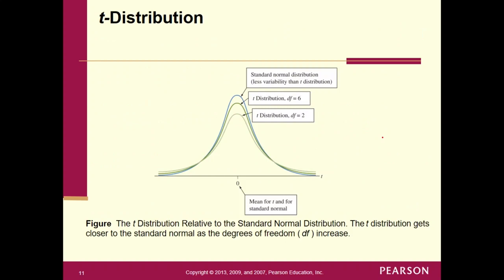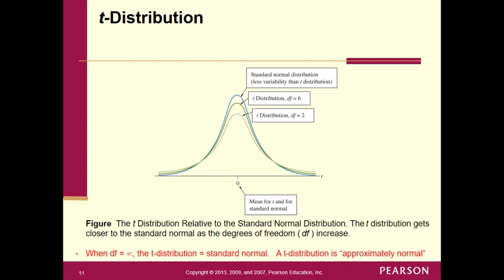Here are three different drawings: one of the standard normal (top graph), and then degrees of freedom of 6 and degrees of freedom of 2. Notice that with degrees of freedom of 2, you get bigger area in the tails, meaning less area in the middle. More degrees of freedom means more area in the middle and less in the tails. The t-distribution gets closer and closer to the standard normal as degrees of freedom increase, and when degrees of freedom equals infinity, the t-distribution equals the standard normal.